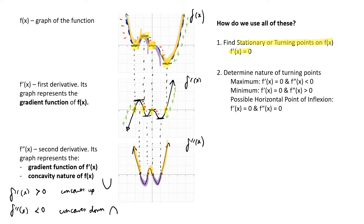Once we find the stationary point, we also want to determine their nature — whether it is a maximum or minimum. If it's a maximum, f dash x is zero and f double dash x is less than zero — in other words we have a horizontal tangent and that section of the curve also concaves down, producing a maximum. For a minimum, we need f dash x equal to zero and f double dash x to be greater than zero — in other words it concaves up. So here we have our maximum and here we have our minimum.